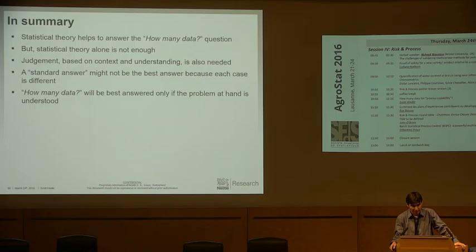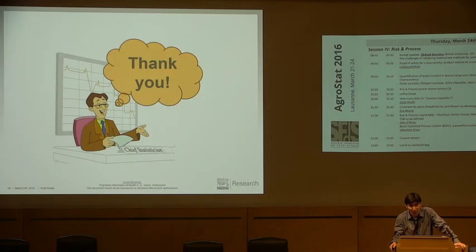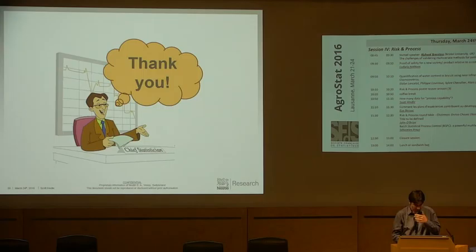To summarize: statistical theory helps to answer the how-many-data question, but alone it's not enough — statistical theory does not know the context of the problem. Judgment is required based on context and understanding. The standard answer of maybe 30 is not really the best answer because it's too one-dimensional. How many data will be best understood only if the problem at hand is understood. And as a final comment: my process is still not capable because I am three minutes over time.